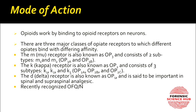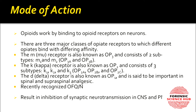The mu receptor is also known as OP3 and consists of two subtypes: mu1 and mu2, also called OP3a and OP3b. The kappa receptor is also known as OP2 and consists of three types: K1, K2, and K3 (OP2a, OP2b, OP2c). The delta receptor, known as OP1, is important in spinal and supraspinal analgesia. The newly recognized receptor is OFQ/N. This binding results in inhibition of synaptic neurotransmission in both the CNS and PNS.